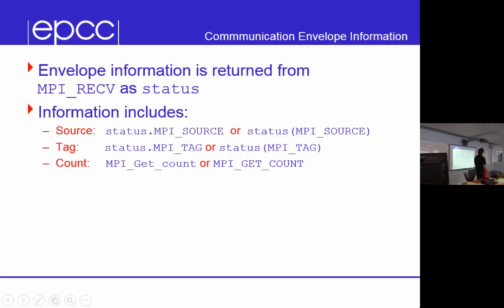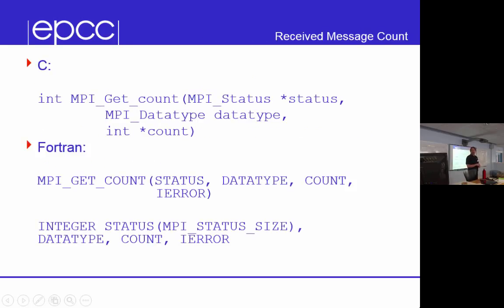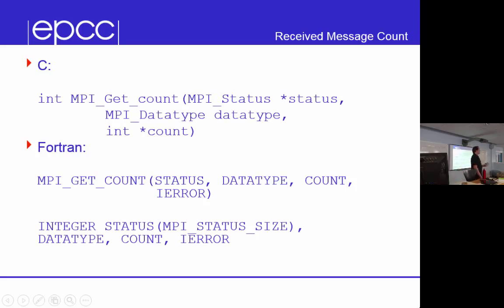To get the count, you call a subsidiary routine called MPI_GET_COUNT, passing the status, the data type, and getting back the count. In Fortran: call MPI_GET_COUNT(status, MPI_INTEGER, count, ierr). It's something of a technicality related to derived data types — asking 'how big is this message' is not well-defined; you have to say 'how many integers were in this message.'